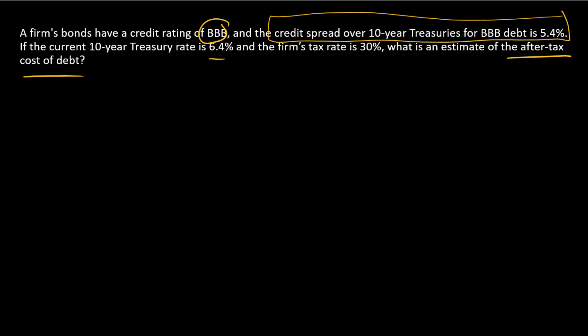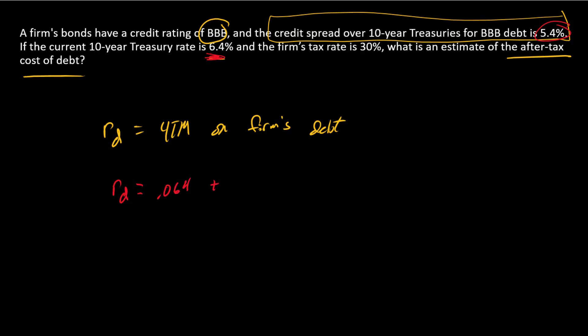Let's start by calculating RD, which is the pre-tax cost of debt — what we think the yield to maturity on the firm's debt should be. If 10-year treasuries are currently yielding 6.4%, and on average BBB bonds have a yield to maturity of 5.4% above treasuries, then our estimate for RD is the sum of those two: 0.064 (the treasury yield) plus the credit spread of 0.054, giving us 0.118.